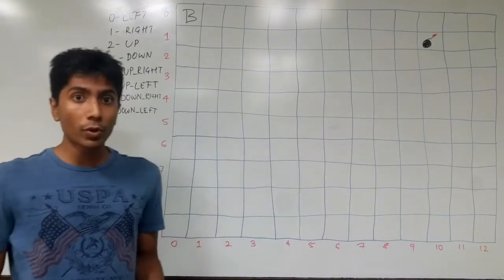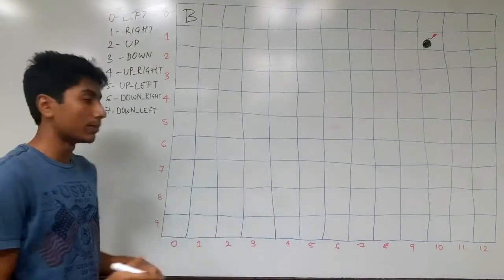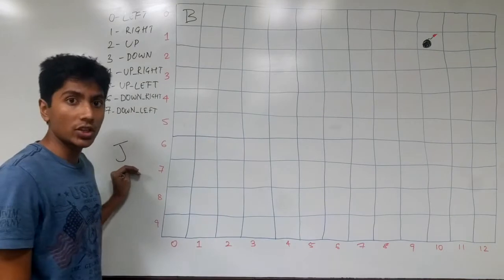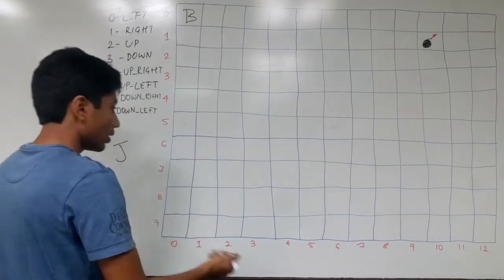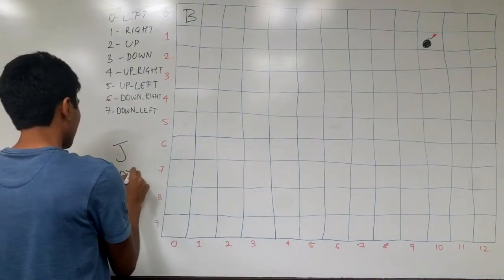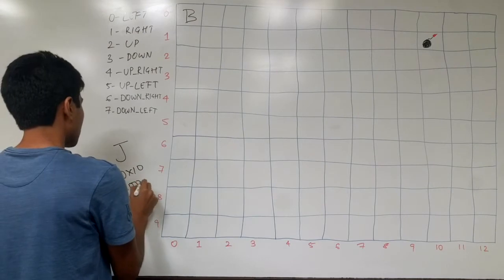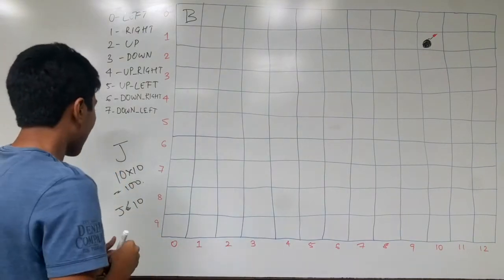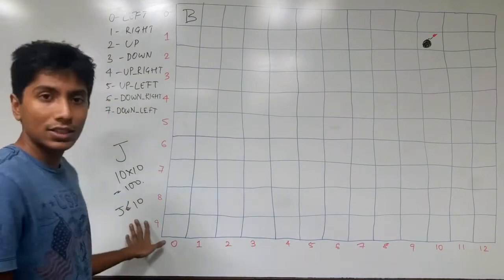The only constraint to the problem is that you can take at most J jumps. So typically if the board is 10 by 10, that's a hundred cells, then J will be around less than or equal to 10, and so on. We'll see why this works out.